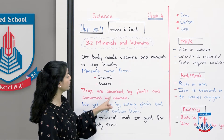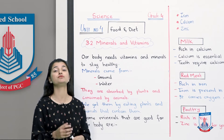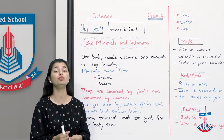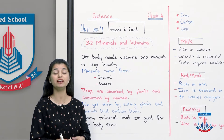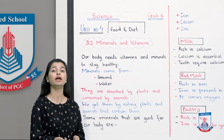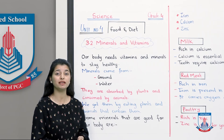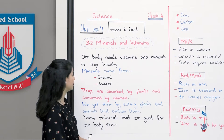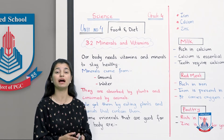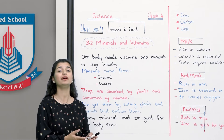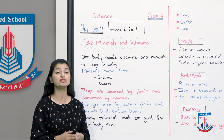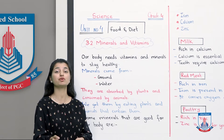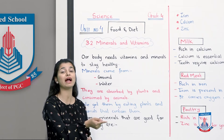Minerals are absorbed by plants and consumed by animals. Plants absorb them through their roots. We get them by eating plants and animals that contain them. Plants can take minerals directly from the soil, while we have to rely on plants or animals that already contain the minerals.